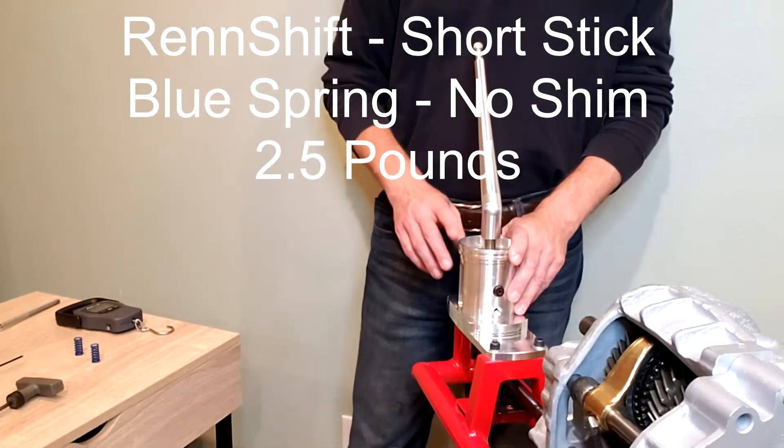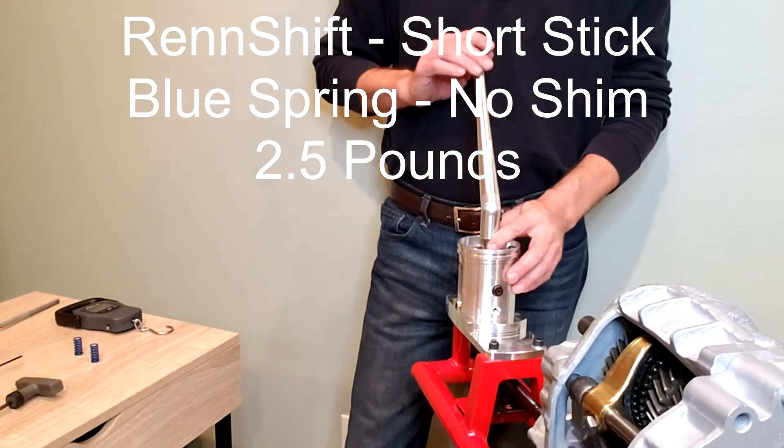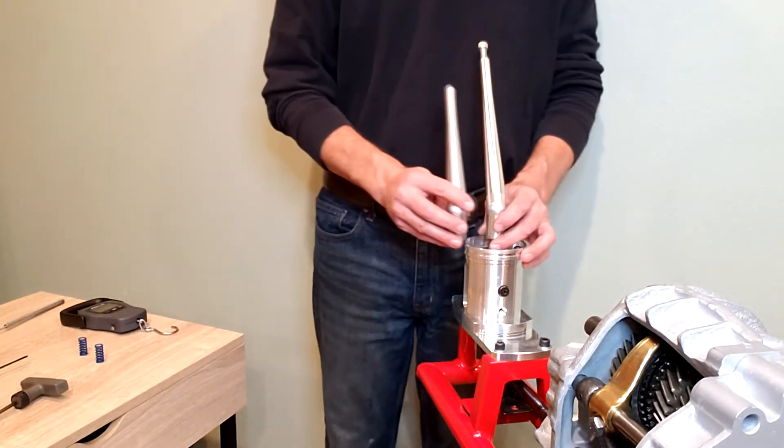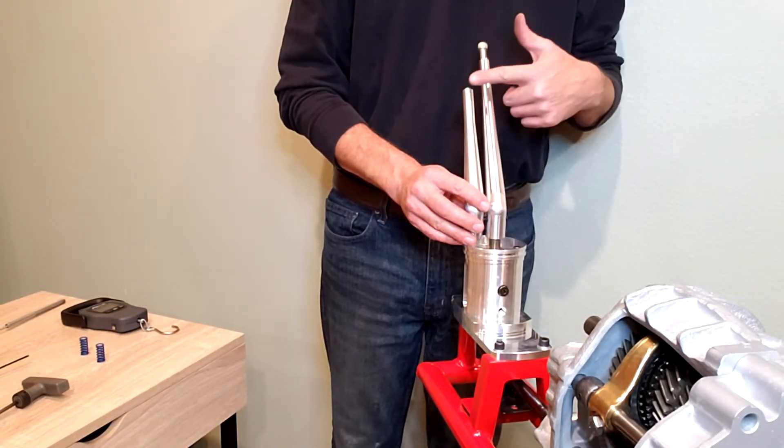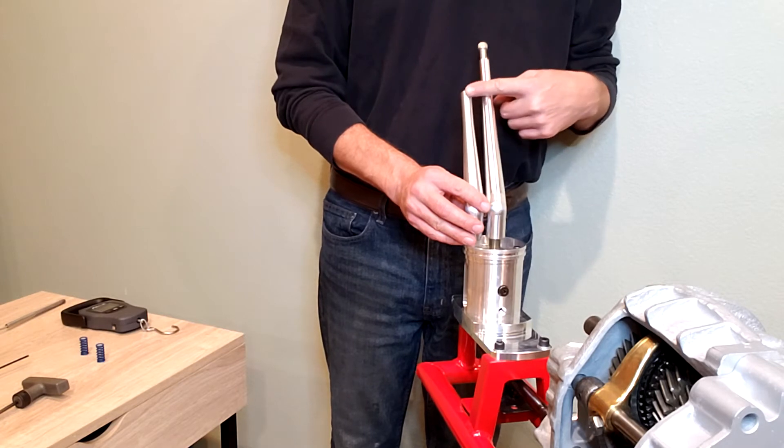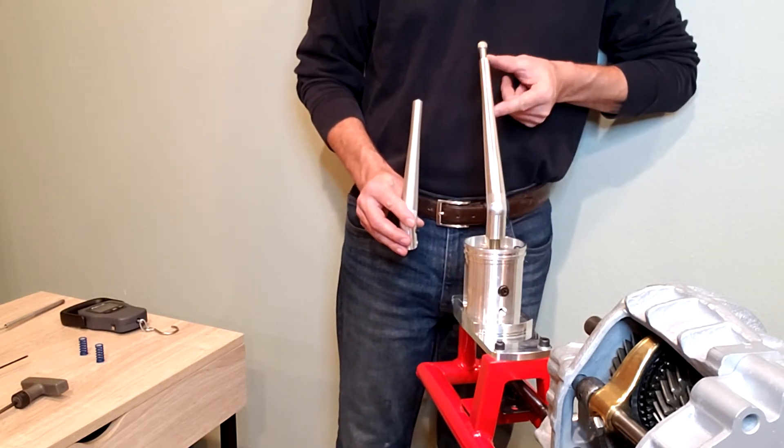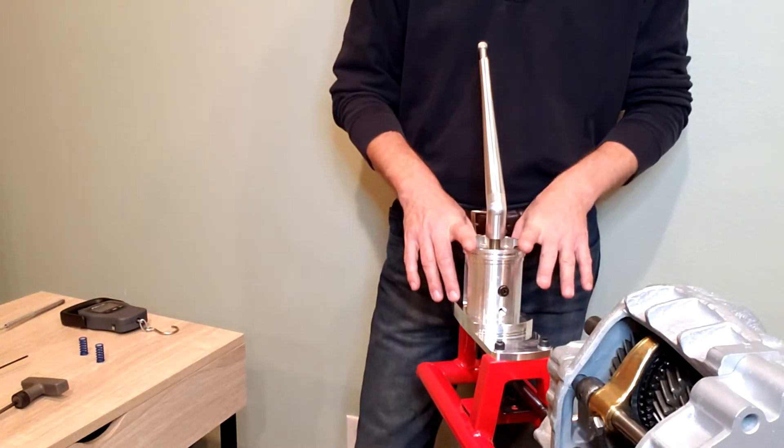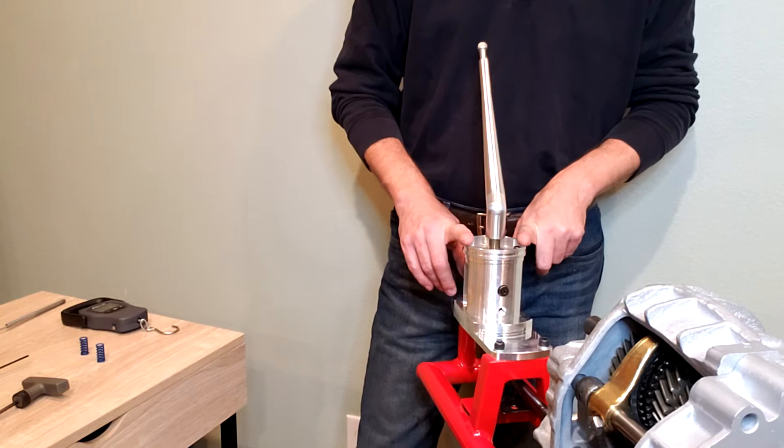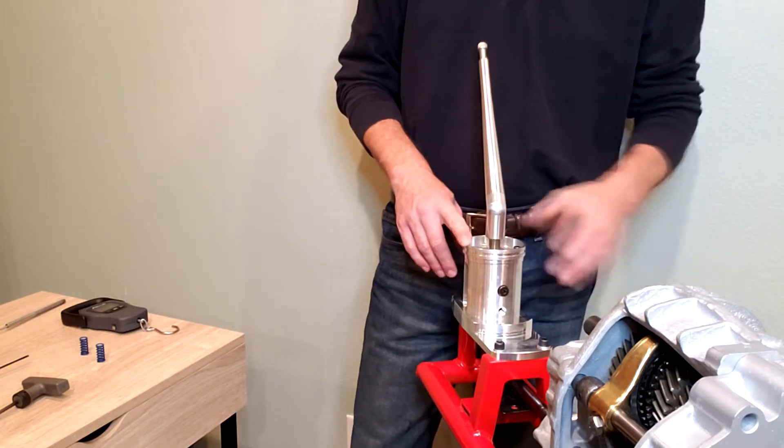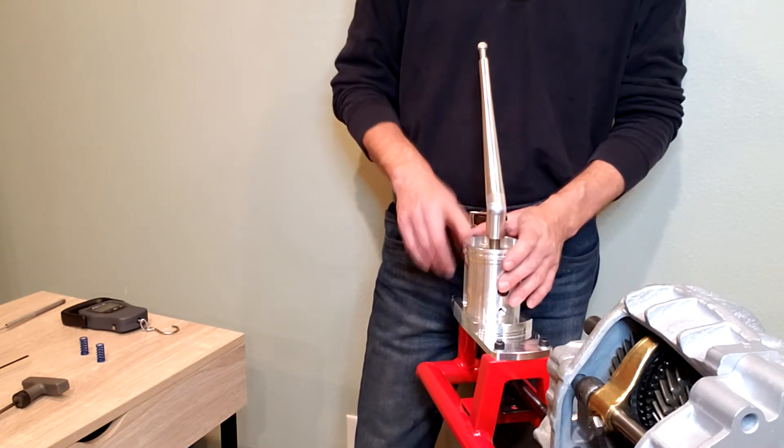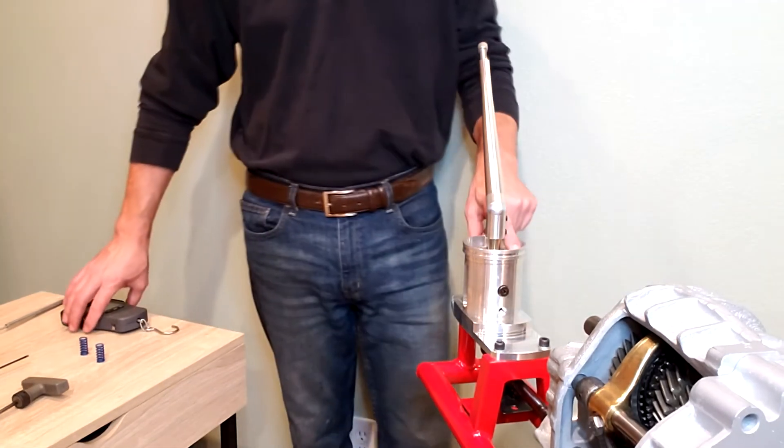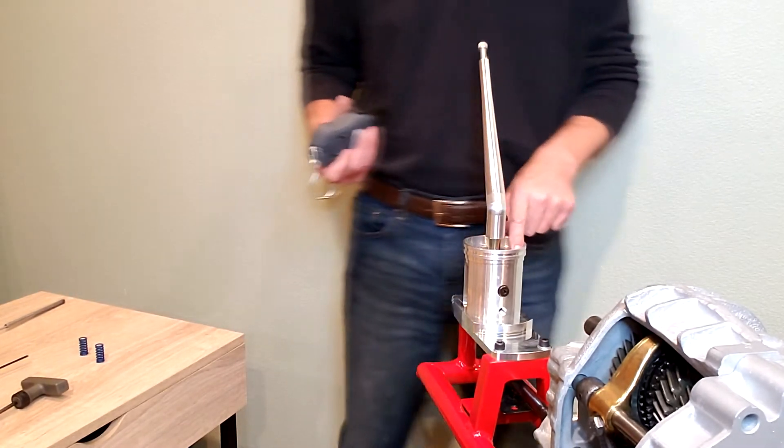I've reconfigured the RenShift with the longer stick. So this stick is two inches longer than the stock length stick. The stock length stick places the knob at the same positioning as your factory shifter. This one is two inches longer along this distance right here along this angle. I've also preconfigured it to our original RenShift configuration. So the heaviest springs will go down in the same order, starting with the gold spring with two shim washers on the right hand side, gold spring with a single washer on the left hand side.